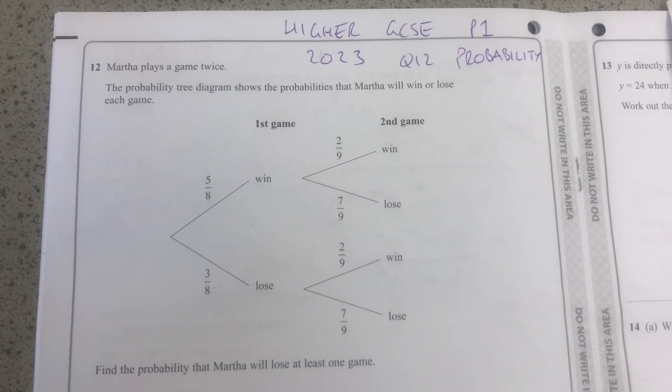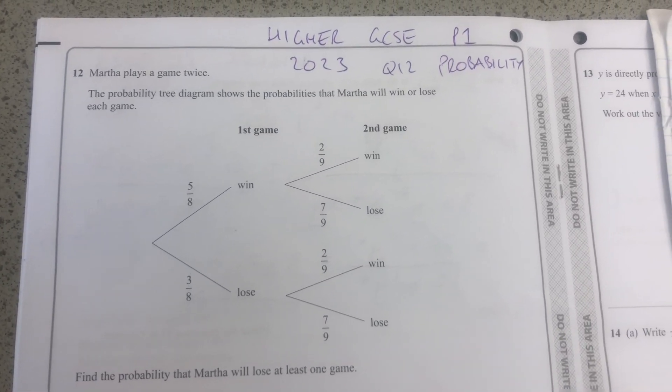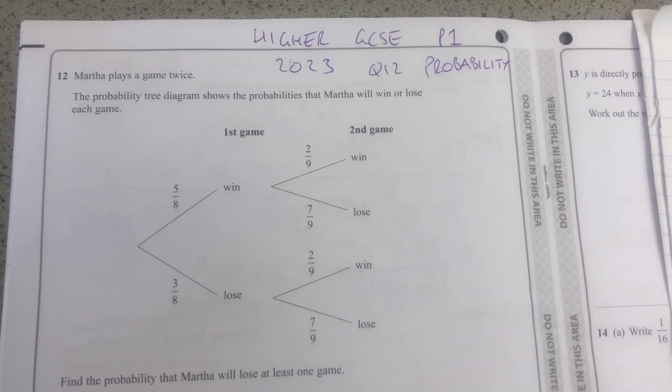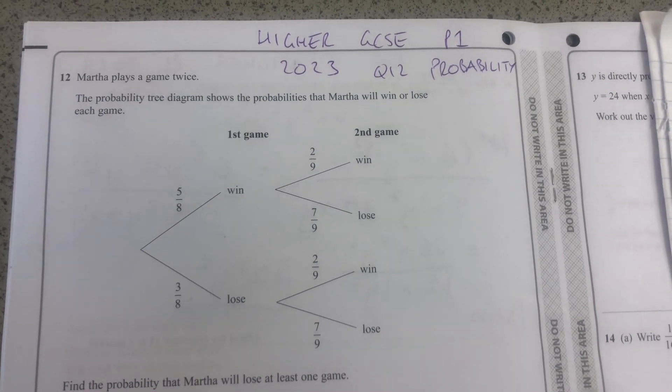Hello and welcome to Martin Maths. We're doing the Higher GCSE Maths paper from the May 2023 series. It's paper one, non-calculator paper, and we're looking at question 12 about probability.